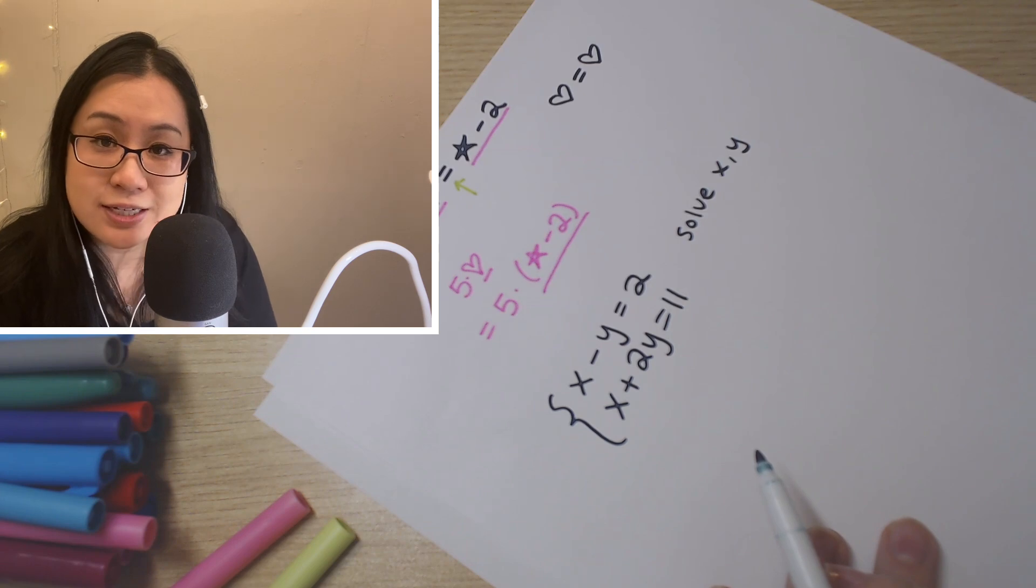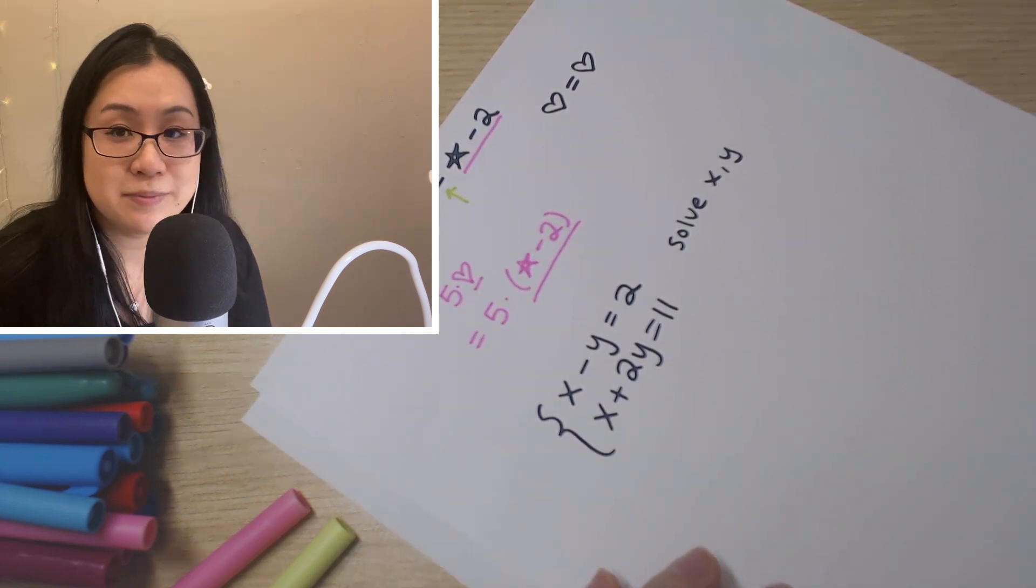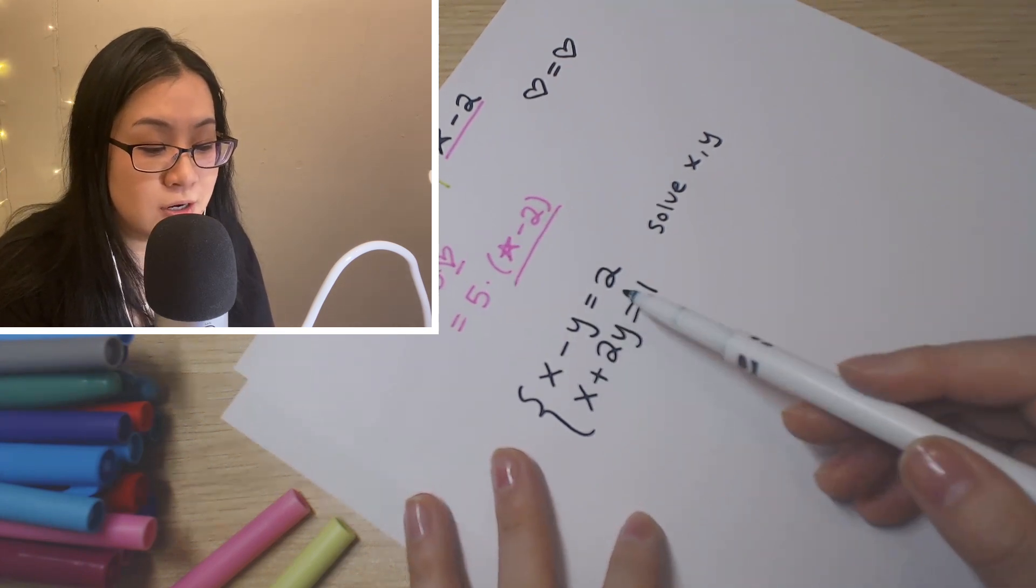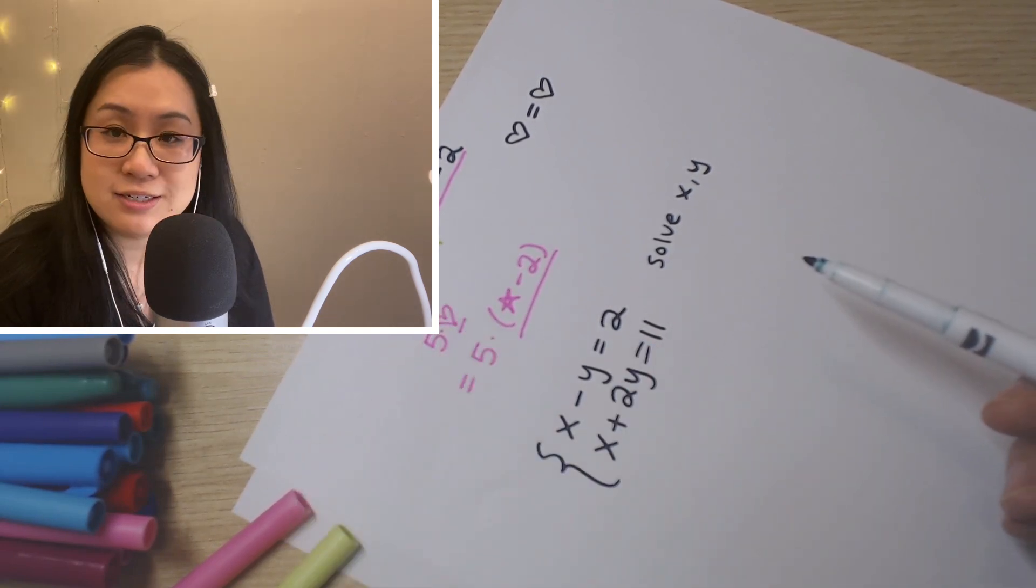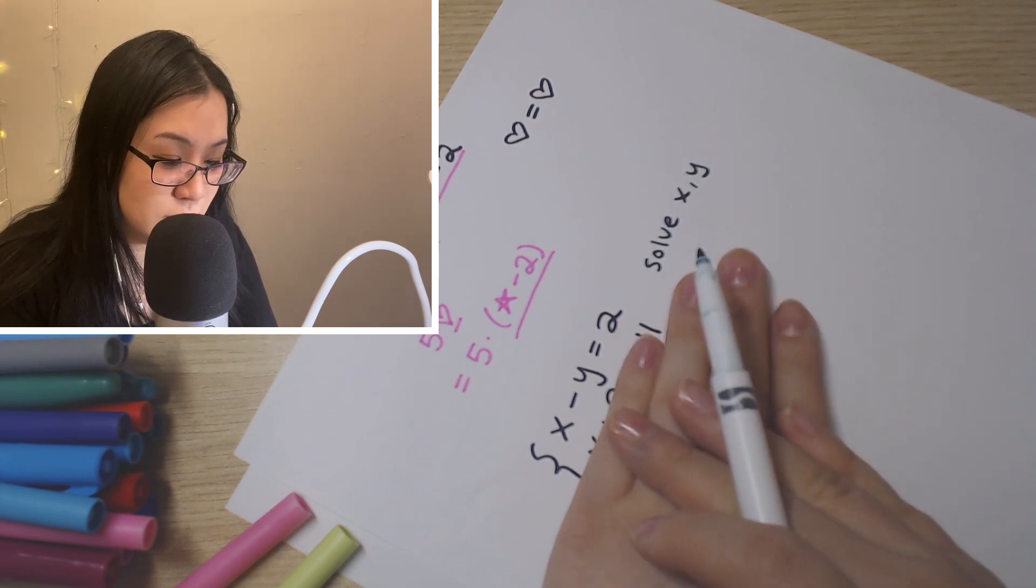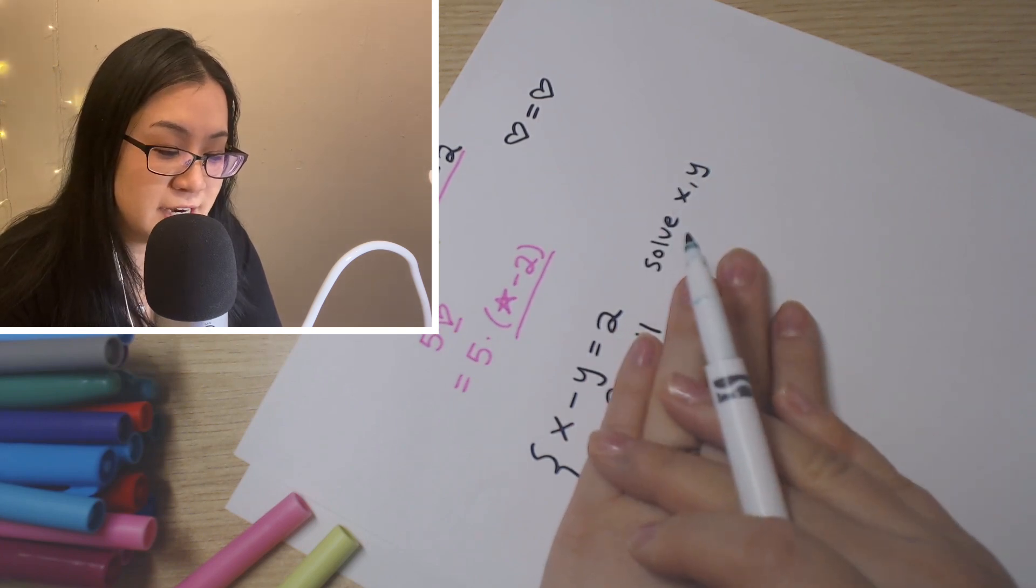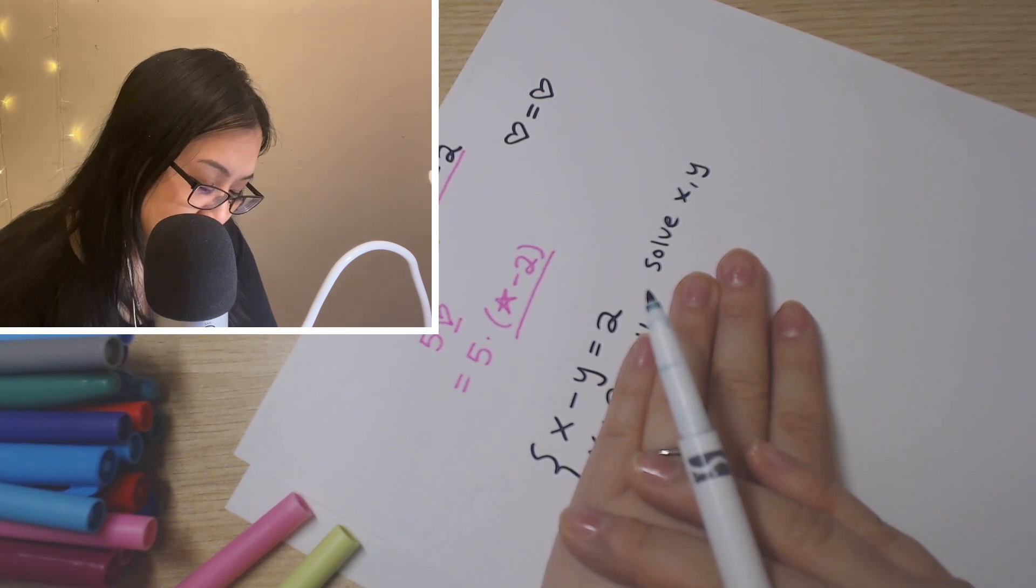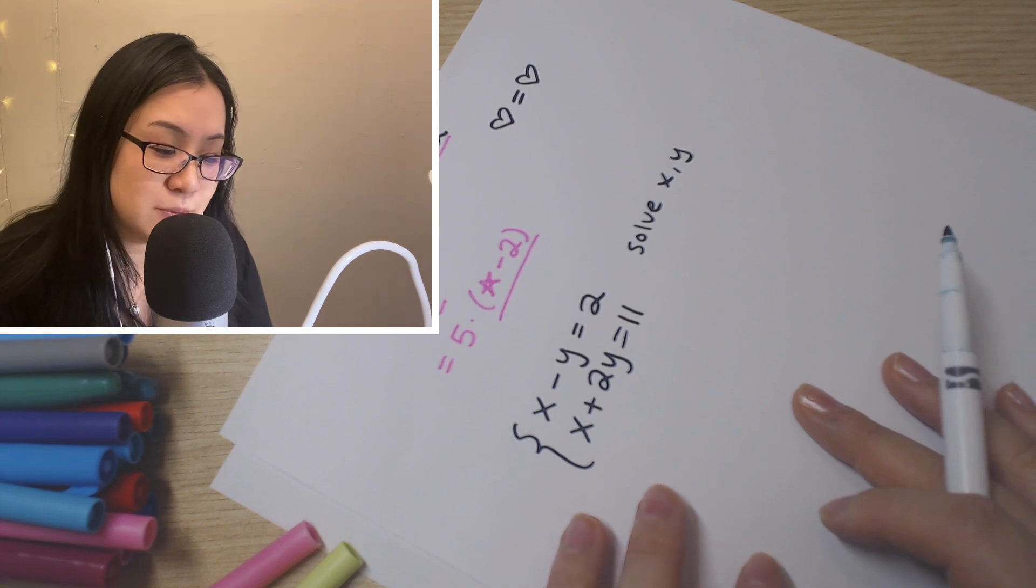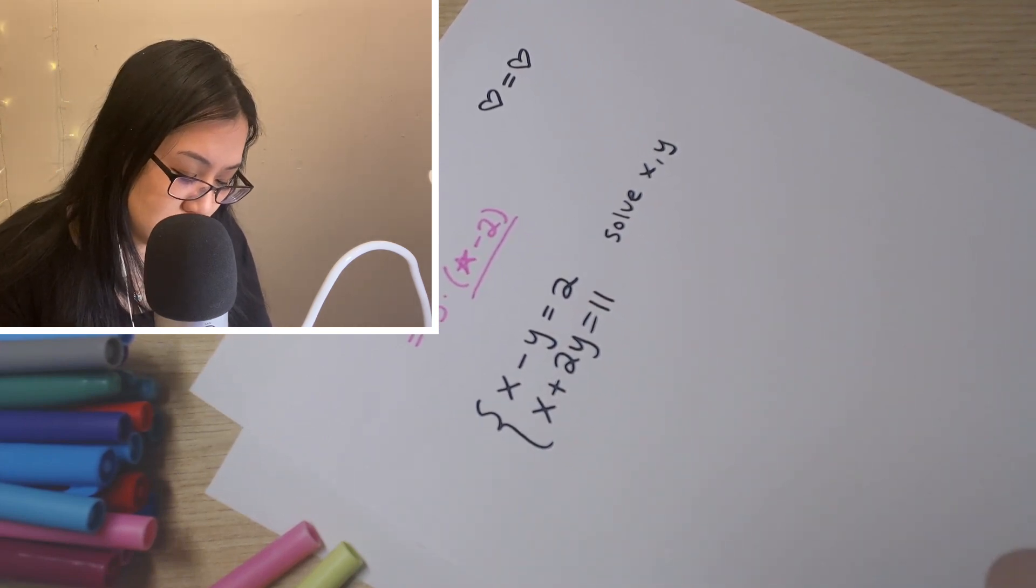Do we know anything about X and Y? X and Y are different letters, right? But that doesn't mean anything about them. They might have the same value. They might have different values. If we have either equation on its own, like X minus Y equals 2, that just gives me a relationship between X and Y. We don't know the exact values. There are actually infinitely many pairs. So we want to solve them together. And that will give us enough information to be able to figure out an actual value for X and Y.